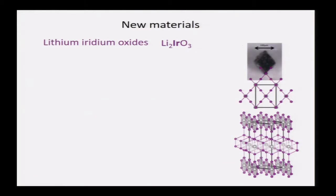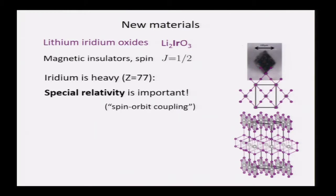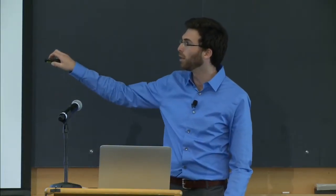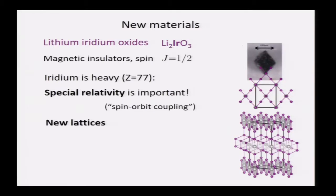Now let me tell you about these new materials that, as a theorist, I collaborated on — both understanding the experimental data and some more theoretically removed aspects. These are iridium oxide materials; they're magnetic insulators, the right thing to look at. There are two new things here. One is special relativity, which comes in because iridium is heavy — it has a large atomic number, so the electrons move very fast around the highly charged nucleus and you get special relativity effects. These go by the name spin-orbit coupling. And another thing is that these materials have very strange new lattices.